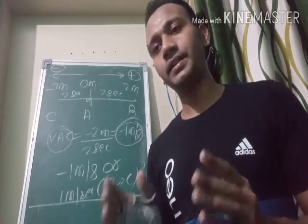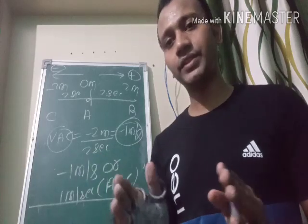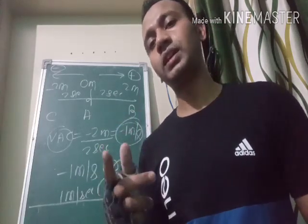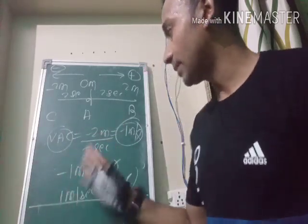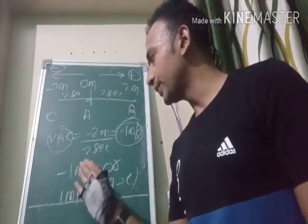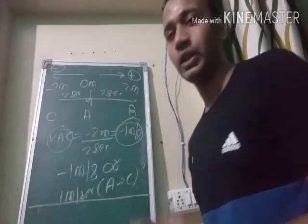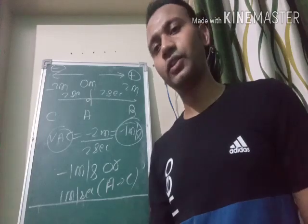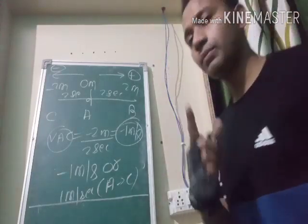So to summarize: a scalar quantity depends only on magnitude and is independent of direction — examples are speed and distance. A vector quantity depends on both magnitude and direction — examples are displacement and velocity. A negative sign on a vector quantity indicates movement in the opposite direction. We have now completed the first two topics and will move to uniform motion.